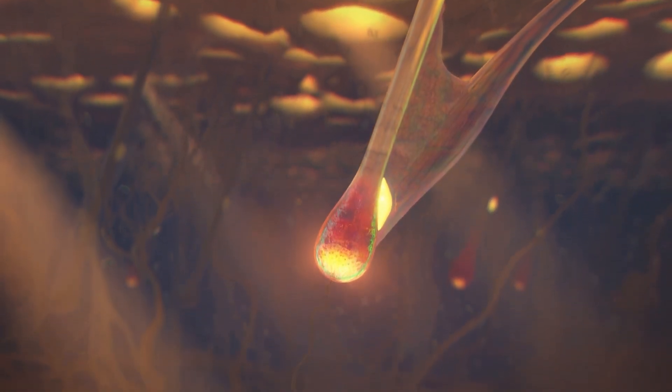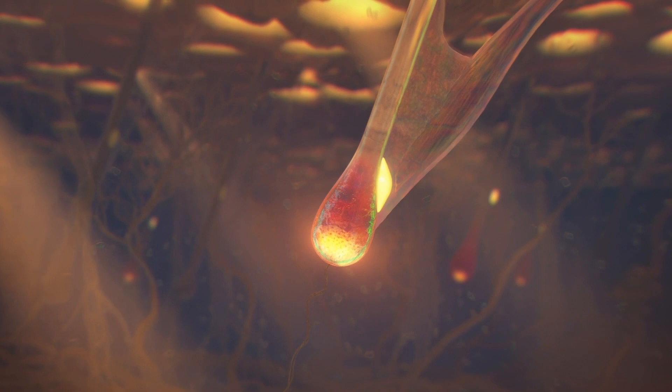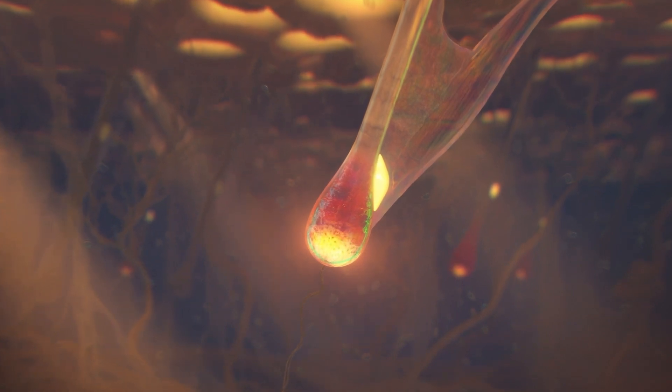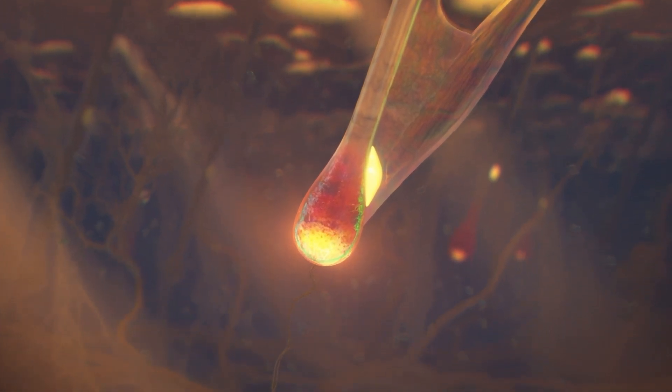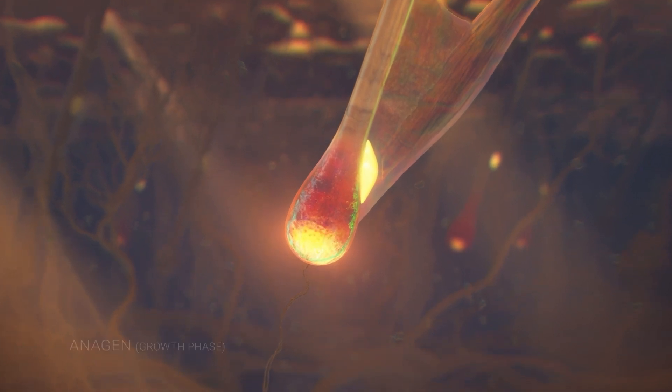The key to success with pro-sugaring treatments is to extract each hair with its entire root, including the bulb, intact. This must be done early during its growth phase, known as anagen.